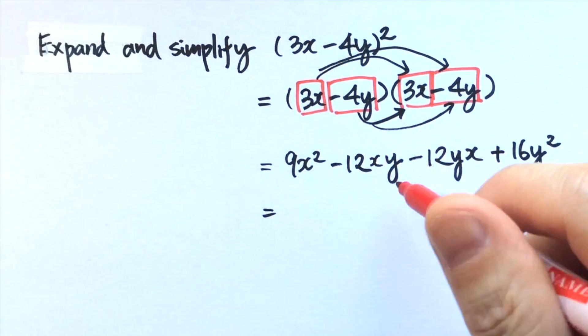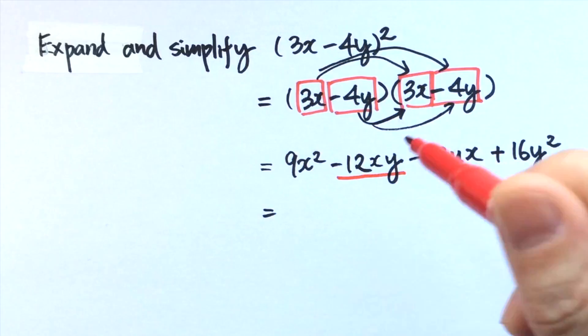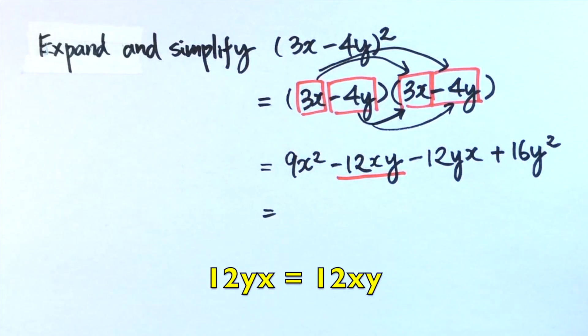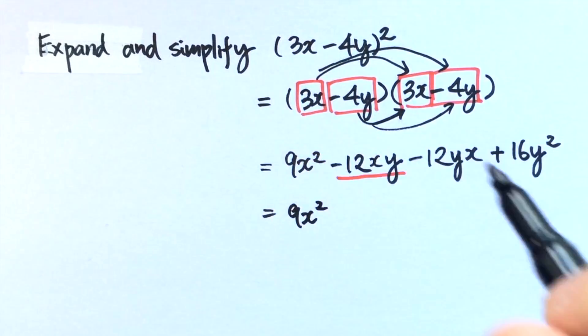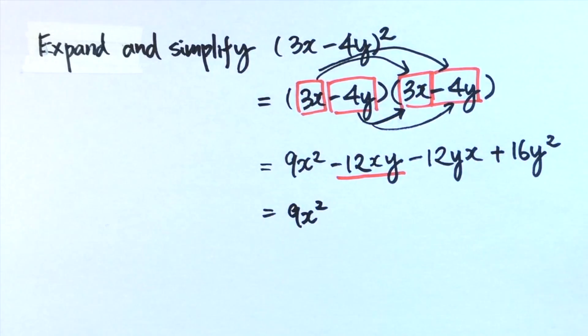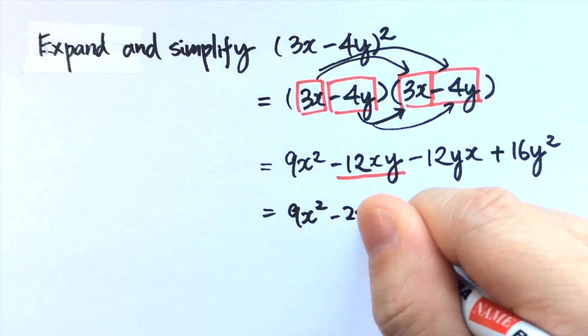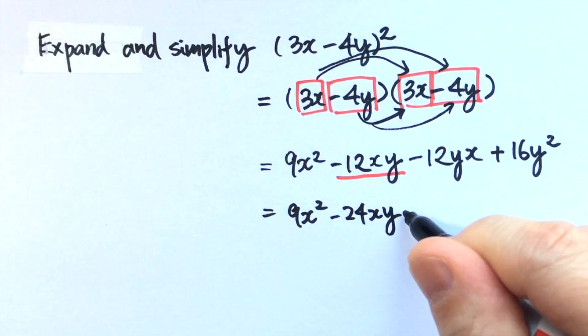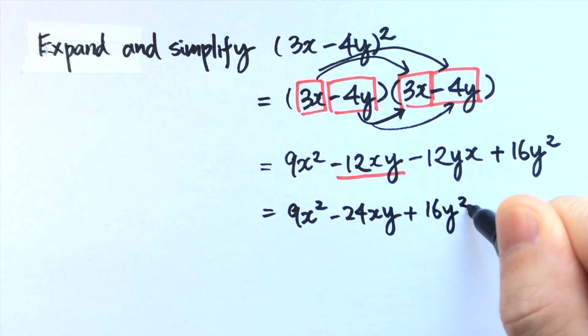And we can find two like terms here: negative 12xy and negative 12yx. yx is the same as xy, so this is 9x squared minus 24xy plus 16y squared.